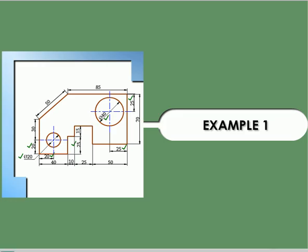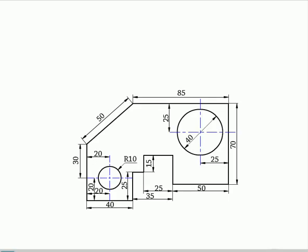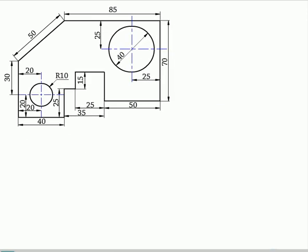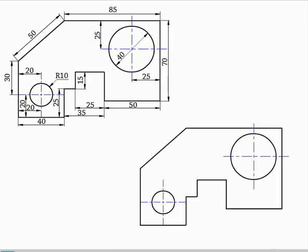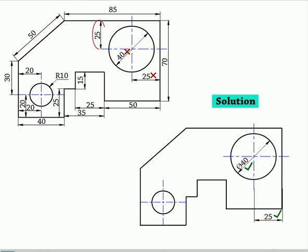Example problem. The given view contains dimensions represented wrongly. The view is to be neatly redrawn, and all the dimensions are to be represented as per the norms. The dimensions are to be represented outside the view. Clear distance should be provided between the outline and the dimension line.